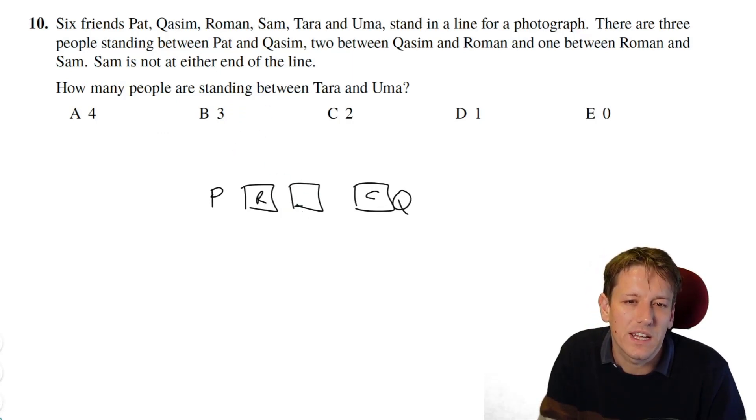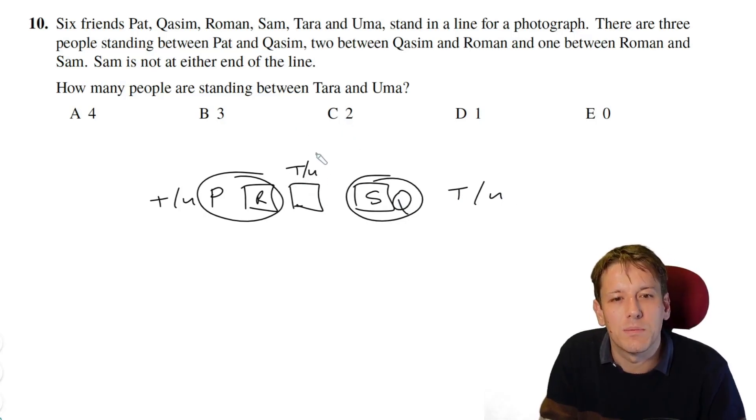Now it says how many people are standing between T and U? We don't know where they are, but this one must be either T or U, and then the other one of T or U must be either to the left of P or to the right of Q here, so it could be here, or could be here, but either way there'll be two people between them, either these two or these two, P and R or S and Q, so whichever arrangement they're in here, it must be that there are two people between Tara and Uma, and so the answer is C2.